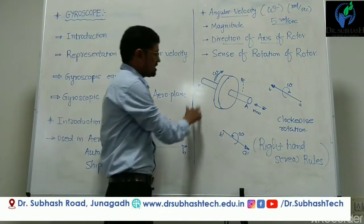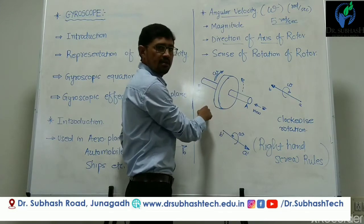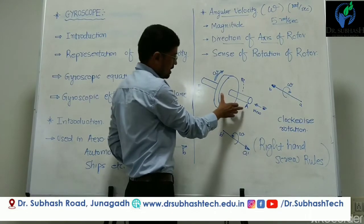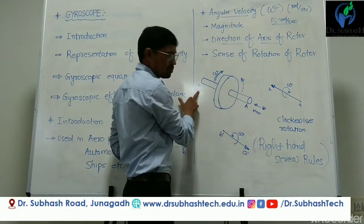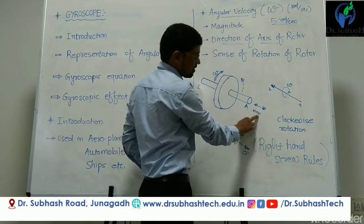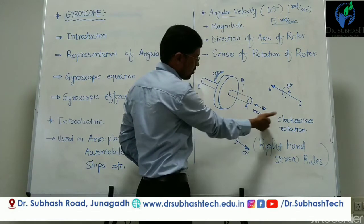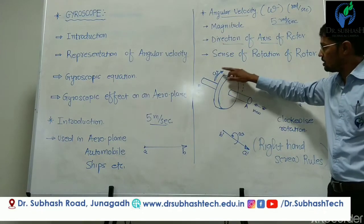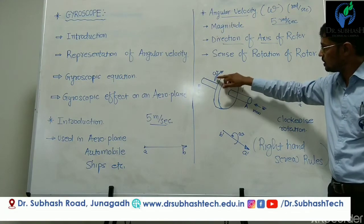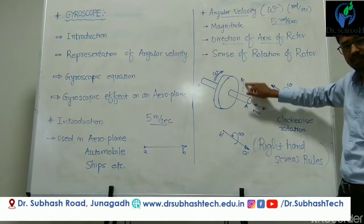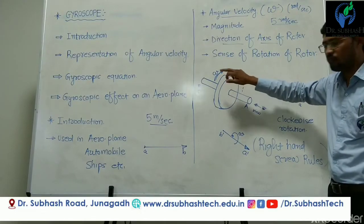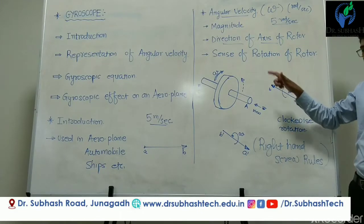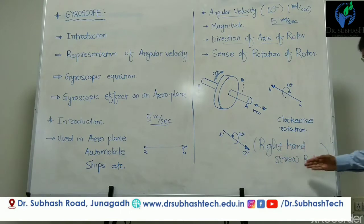Let us consider one rotor. This rotor has two ends: A end and B end. The rotor is mounted on a shaft with one end A and another end B. We have an observer viewing the rotor from one end, and from that end we can say that our rotor is rotating in a clockwise direction at an angular speed omega.